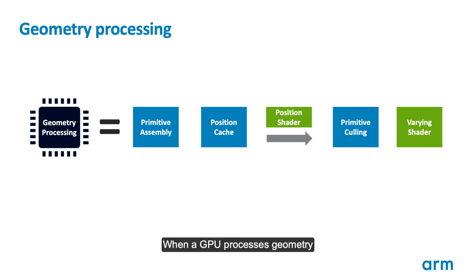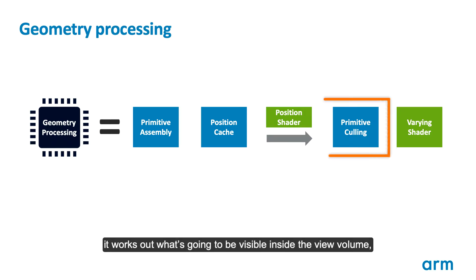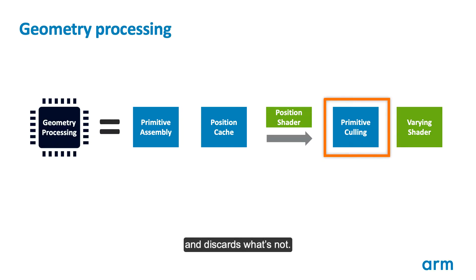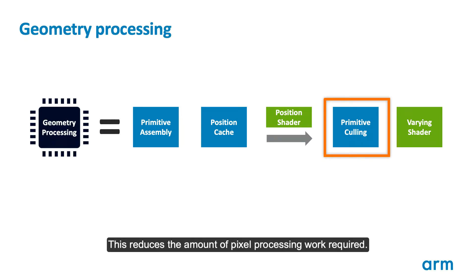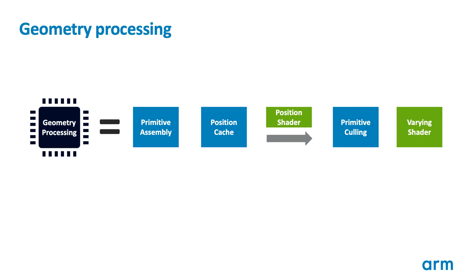When a GPU processes geometry, it works out what's going to be visible inside the view volume and discards what's not. This reduces the amount of pixel processing work required.